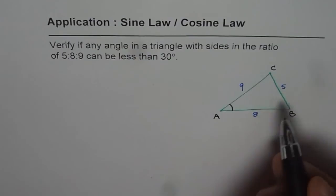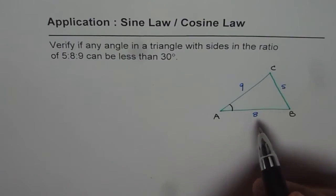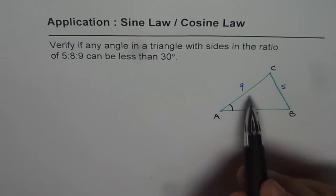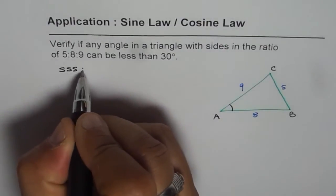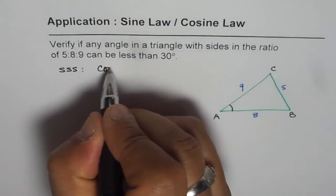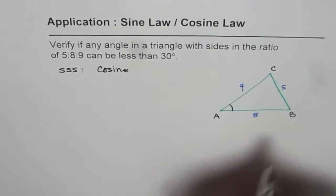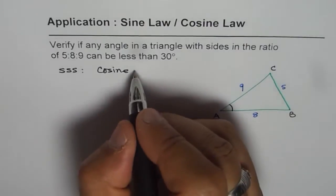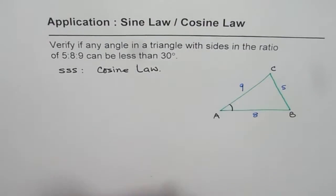So let us find angle A. To find angle A, since we know three sides — side, side, and side — we should apply Cosine Law. That is the only way to solve this triangle. So this is a Cosine Law application.